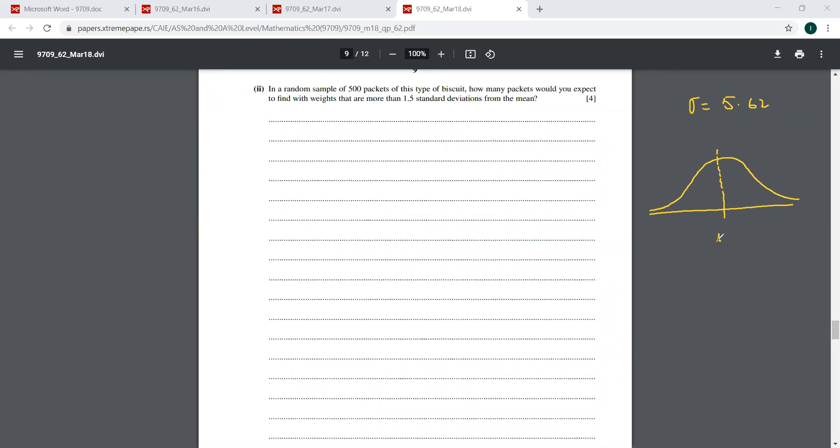Now here is your mean. And it says more than 1.5 standard deviations. So now this gap over here is 1.5 times the standard deviation. This is also here 1.5 standard deviations. So it's asking basically that more than, so this is going to be this region.